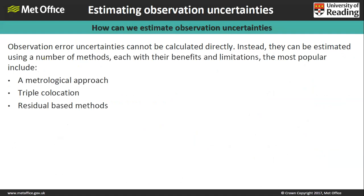So how do we estimate those observation uncertainties to fill our R matrix? There are quite a lot of methods, but I'll mention the three most popular and go into more detail about one of them.